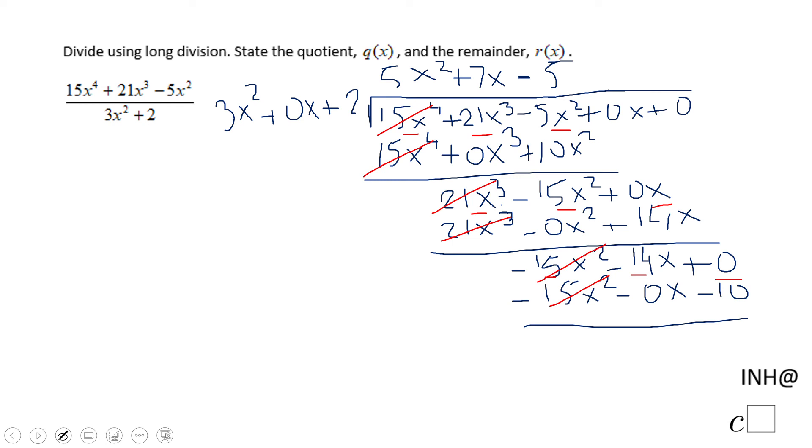And then we have negative 14 minus negative 0. That is negative 14x. And 0 minus negative 10. That is positive 10. The degree of the remainder is less than the degree of the divider. So we stop here.